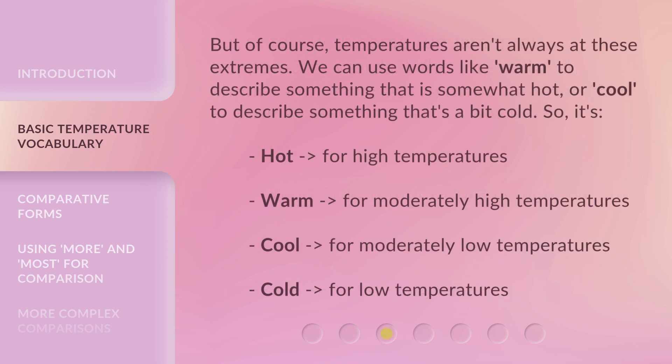But of course, temperatures aren't always at these extremes. We can use words like warm to describe something that is somewhat hot, or cool to describe something that's a bit cold. So: hot for high temperatures, warm for moderately high temperatures, cool for moderately low temperatures, and cold for low temperatures.